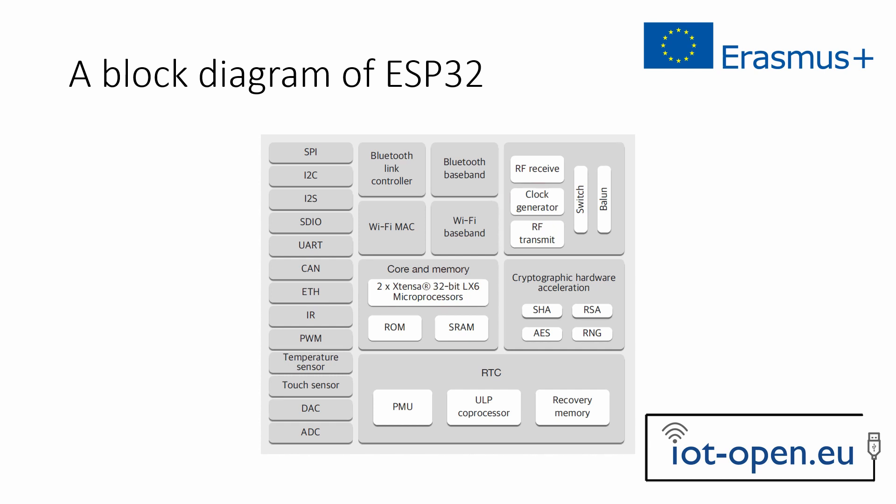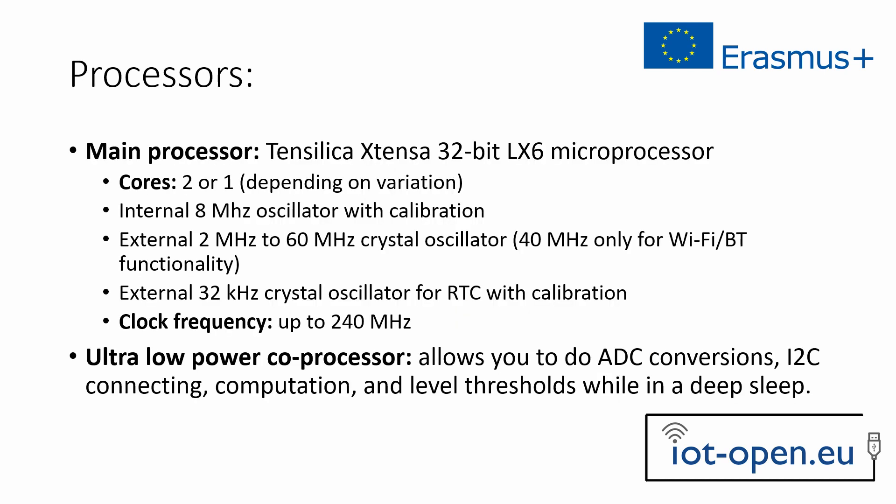The main processor is a Tensilica Xtensa 32-bit LX6 microprocessor with one or two cores depending on the variation, internal 8MHz oscillators, external oscillators able to work between 2MHz and 60MHz (but 40MHz only for Wi-Fi and Bluetooth functionality), an external 32KHz crystal oscillator for real-time clock with calibration, and a processor clock frequency of up to 240MHz.